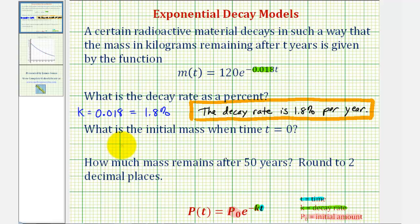But just to show why, let's go ahead and evaluate this function at t equals zero. So m(0) would be equal to 120 times e raised to the power of negative 0.018 times zero. So notice here the exponent on e is zero. So we have 120 times e to the zero.